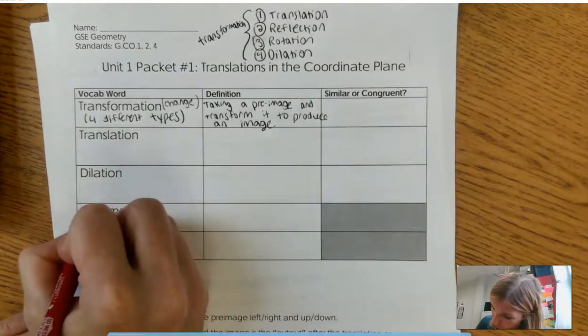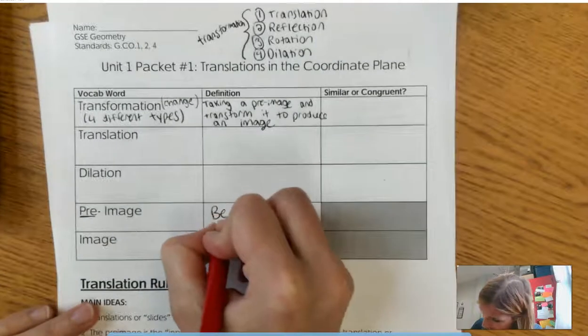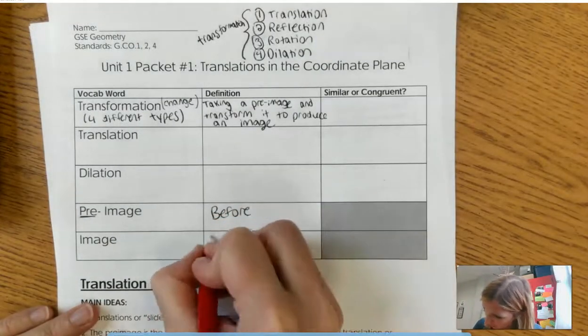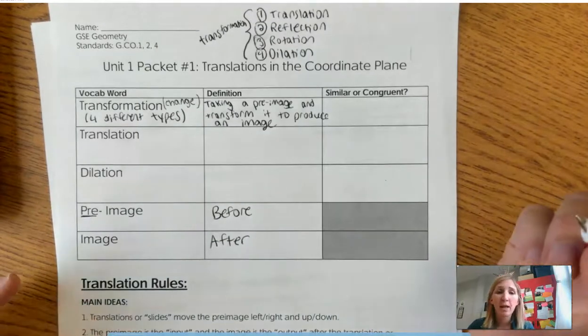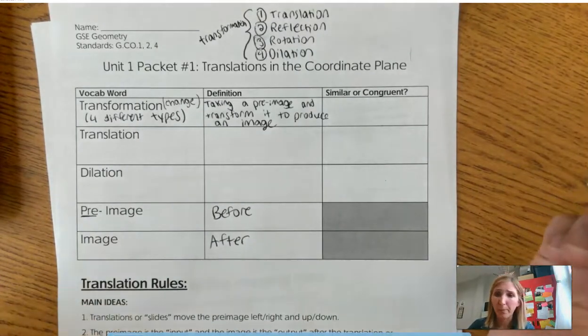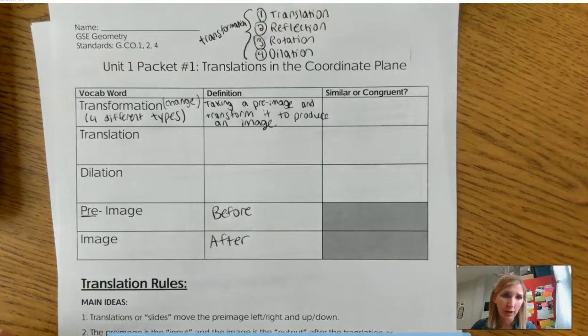If you said pre-image, you are correct. So pre-image is before and the image is after. And when we say image, we could mean anything. We could mean a point, a circle, a triangle, whatever.